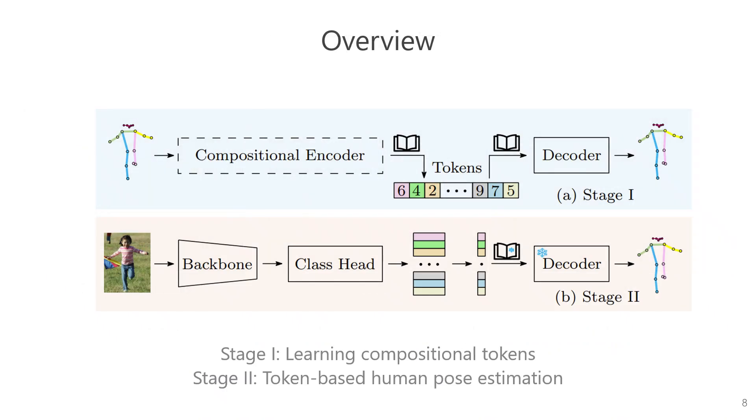Now, I'm going to introduce our method in a more detailed way, which is divided into two stages. The first stage aims to learn to represent poses as discrete tokens. Once trained, we can pass the pose through the well-trained encoder and codebook to get its tokens. Likewise, the tokens can be utilized with the aid of the well-trained decoder and codebook to reconstruct the original pose. In essence, we represent the pose using discrete tokens.